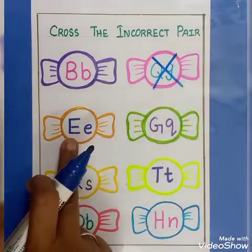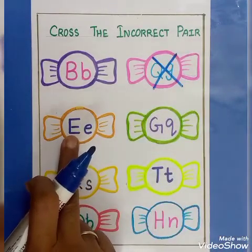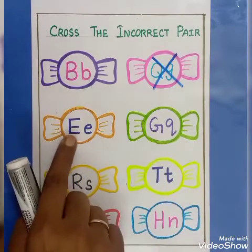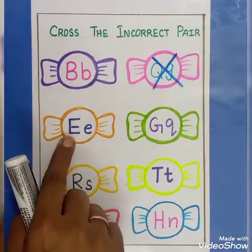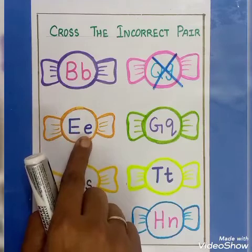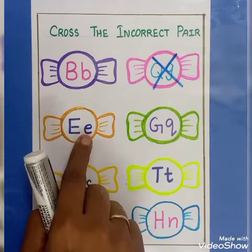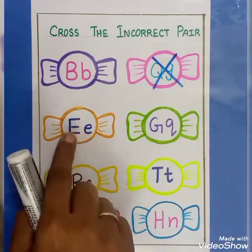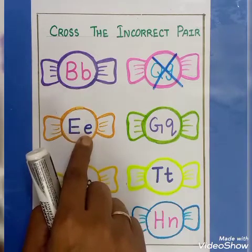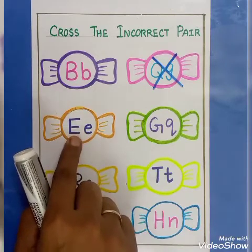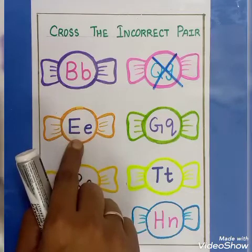Next one. This is capital letter E. This is small letter E. Capital E, small e. This is a correct pair.